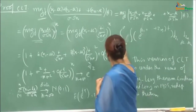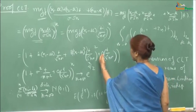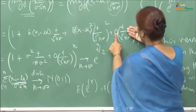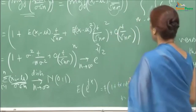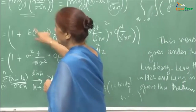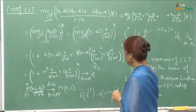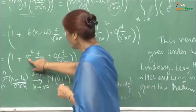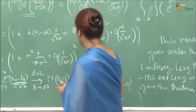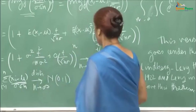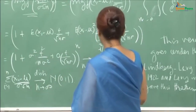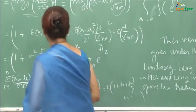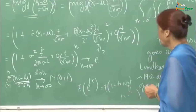This gives us [1 + E(x₁ − μ) · t/(σ√n) + E(x₁ − μ)² · t²/(2σ²n) + higher order terms]ⁿ. Now, E(x₁ − μ) = 0 because each xᵢ has mean μ, so that term vanishes. And E(x₁ − μ)² = σ². So we are left with [1 + σ²t²/(2σ²n) + higher order terms]ⁿ, which simplifies to [1 + t²/(2n) + higher order terms]ⁿ.